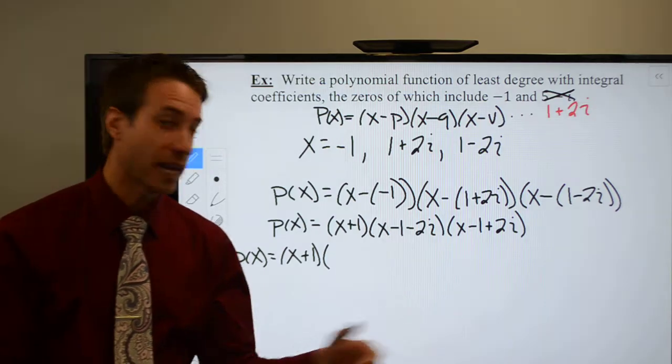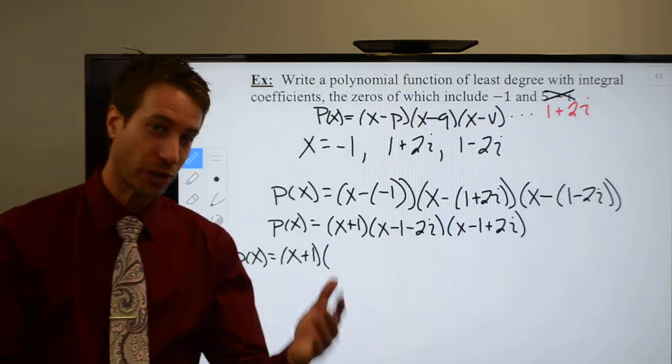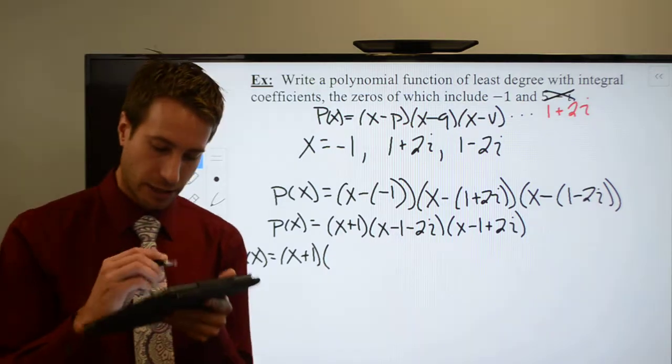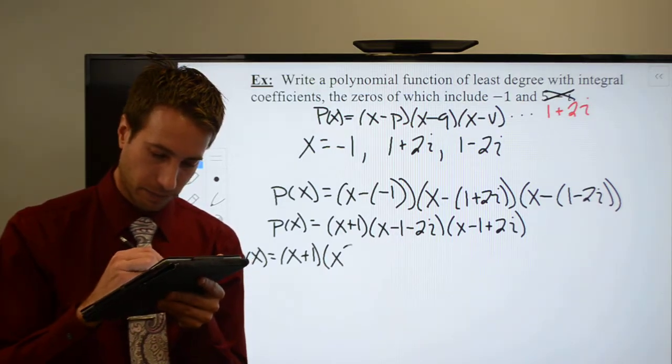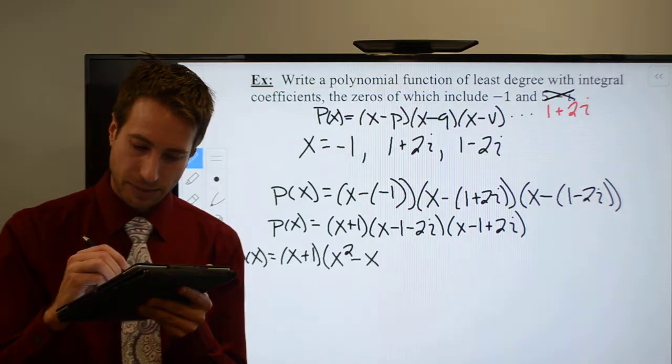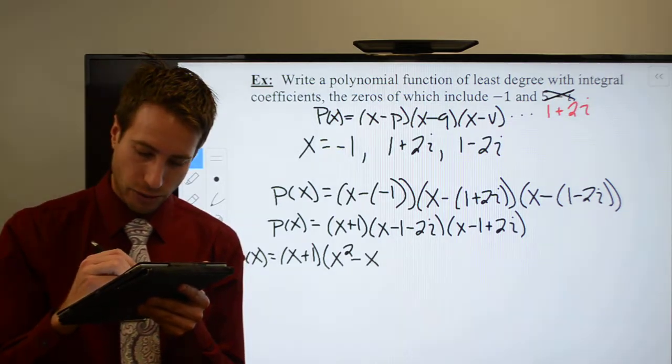Trying to leave myself a little bit more space. Maybe this time I won't have to squeeze. Let's see what happens. x times x is x squared. x times negative 1 is going to be minus x. x times 2i is going to be 2xi.